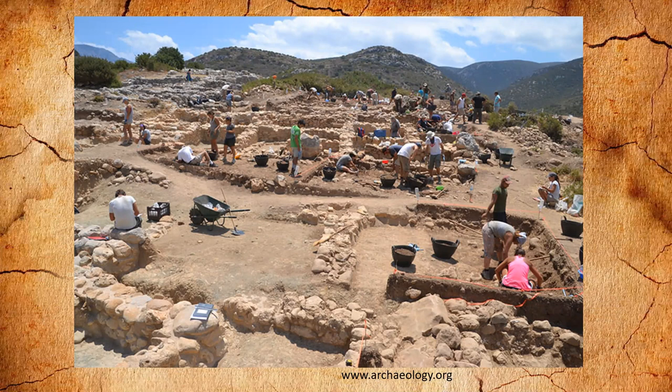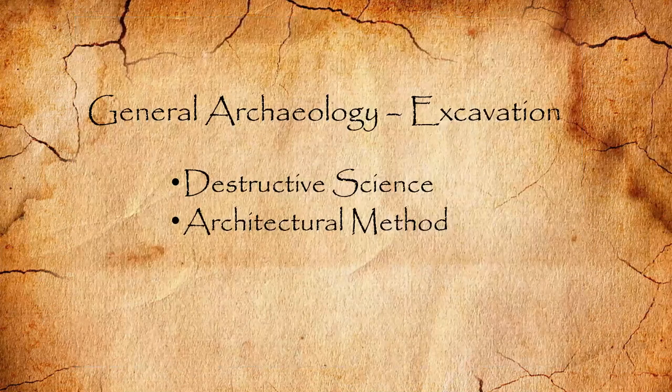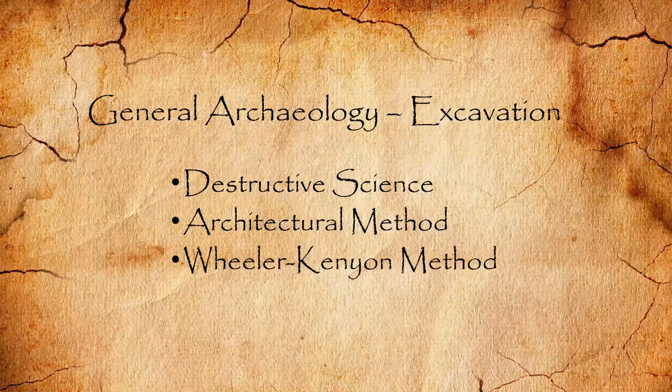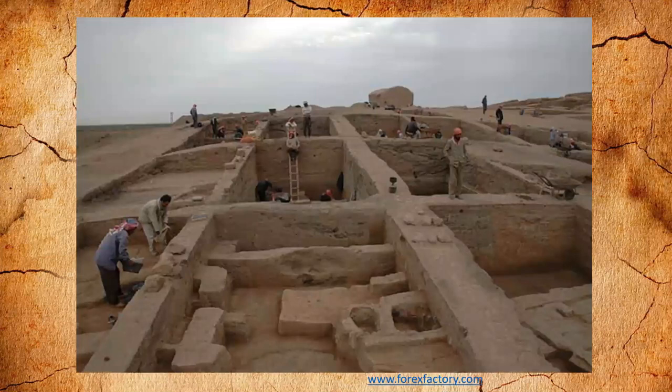However, this sometimes loses some of the detail you might ordinarily get, which leads us to another method called the Wheeler Canyon method — also called the British method or the Earth Layers method. This is a very organized digging methodology. You have surveyed squares, normally about six meters by six meters. Of that, you will excavate about five meters by five meters, leaving a meter around two of the edges. Those are called bulks — they're dividers between the squares. The bulks allow you to see the progressive layers of soil as you excavate down.